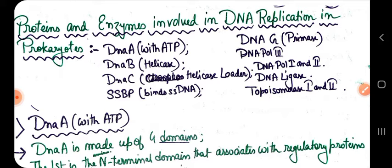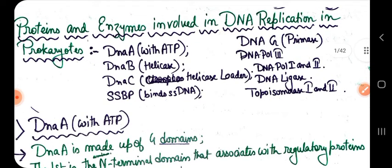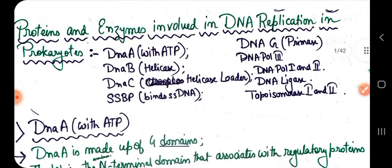SSBP's main job is to prevent rewinding of the DNA until the newly synthesized strand has been fully synthesized. Another function is to protect the single-stranded DNA from being degraded by nuclease enzymes, because all DNA replication events occur within the nucleus at the S phase of the cell cycle.